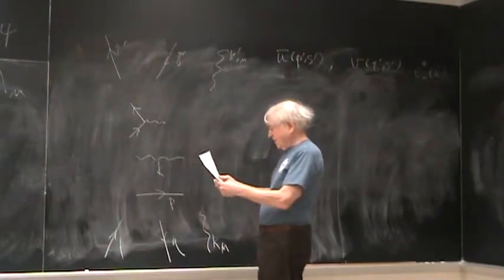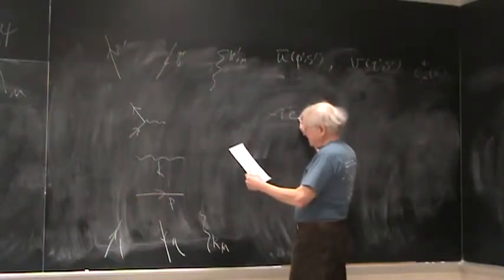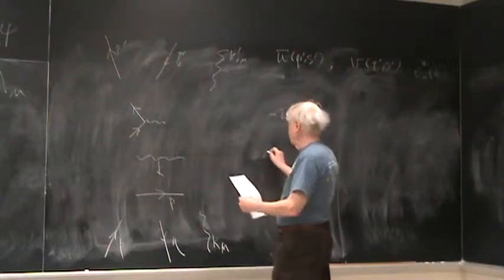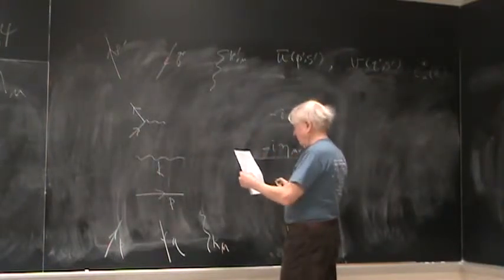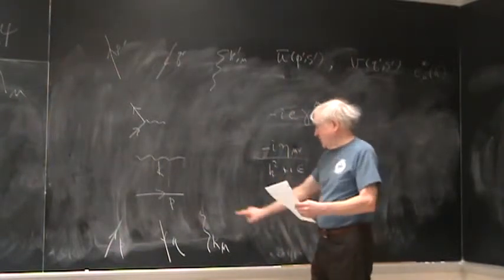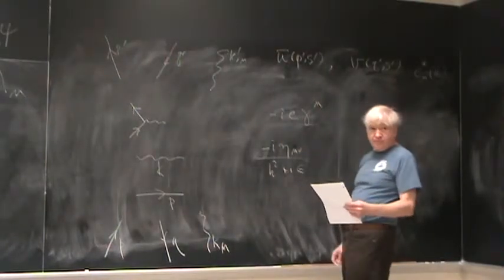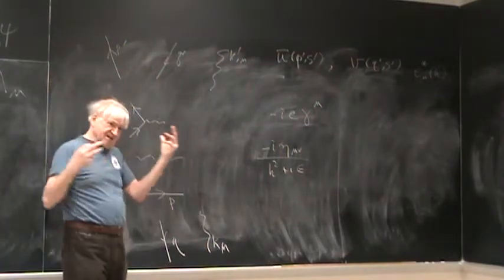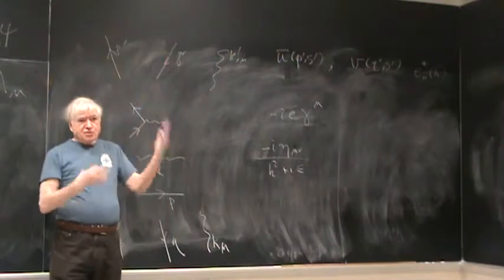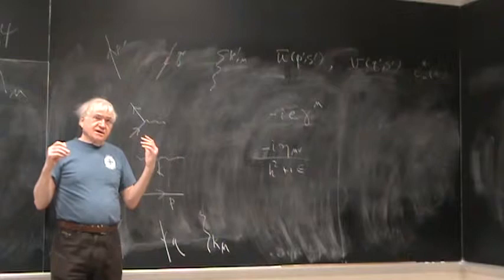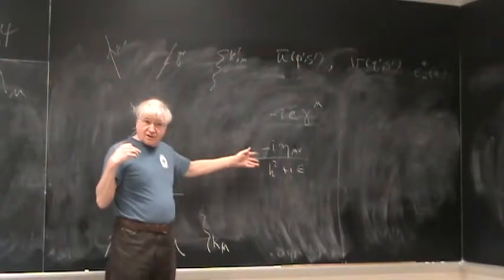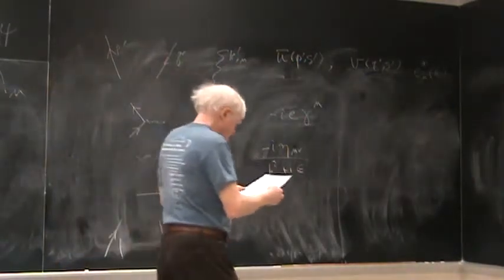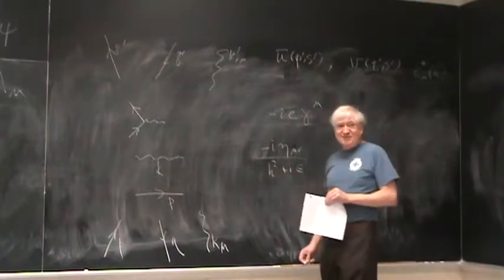For a vertex, what you put in is minus ie gamma-mu. For a photon propagator, it's minus i eta-mu-nu over k-squared plus i-epsilon. That's only for the Coulomb gauge: you're quantizing in Coulomb gauge, you have the instantaneous potential, then that gives a miserable propagator, and you realize you've replaced it with a nice covariant propagator as you ignore the instantaneous Coulomb interaction. It sounds like a Faustian bargain, but it works out.